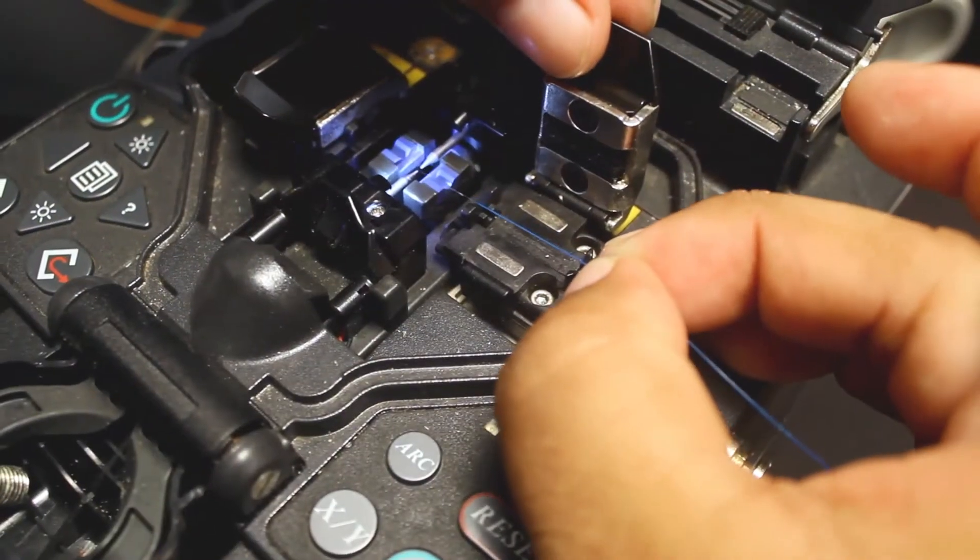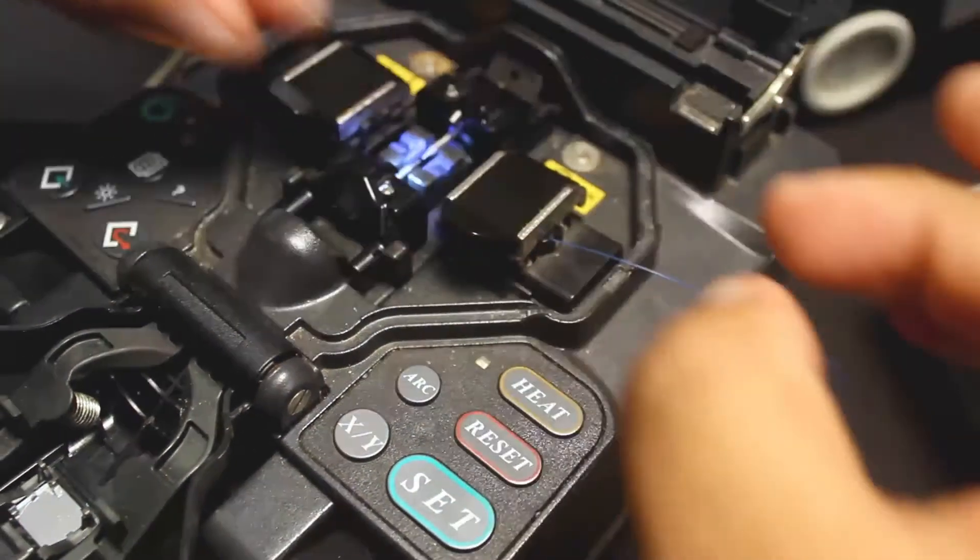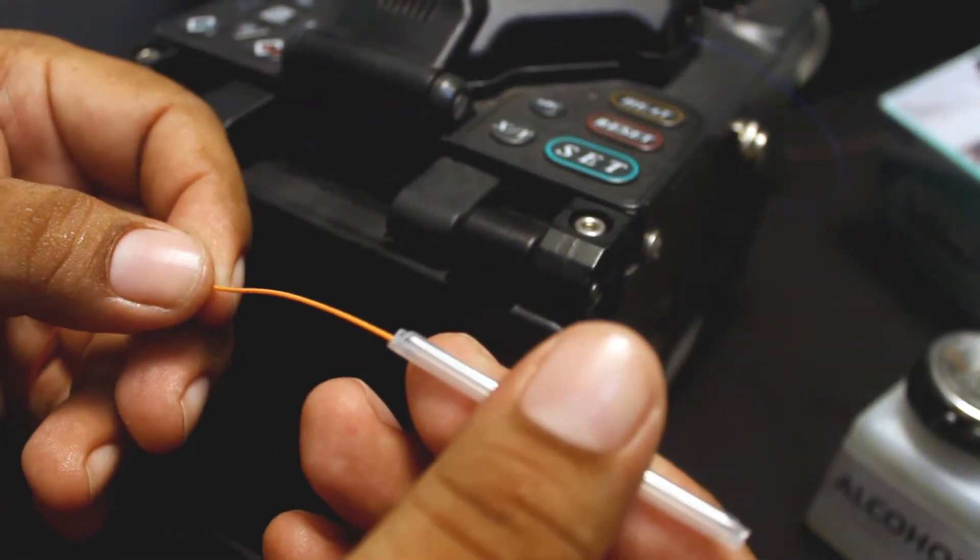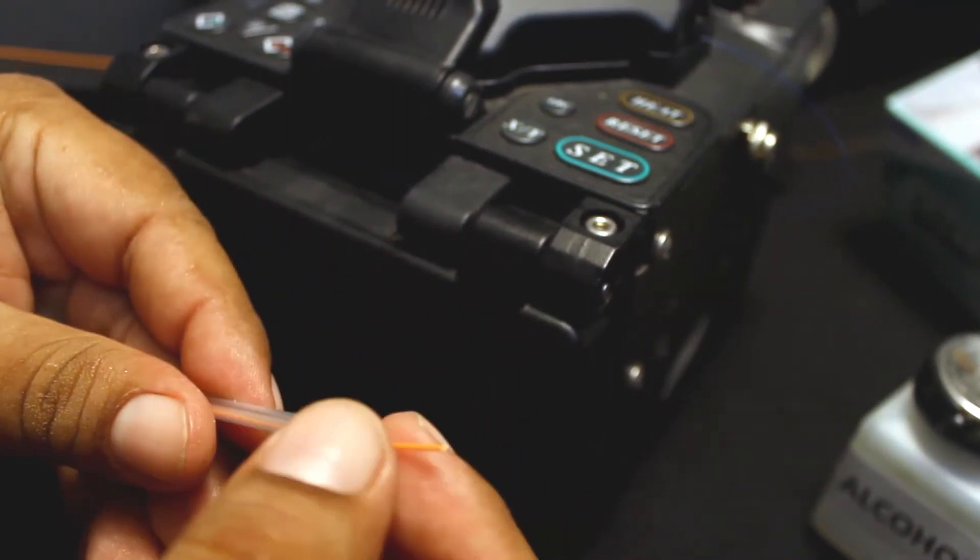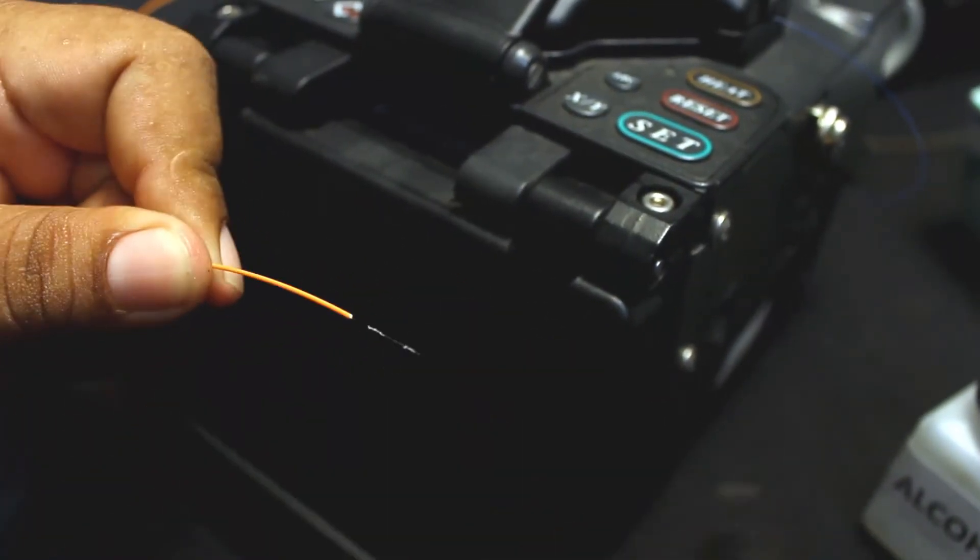Place the fiber into the splicer as close as possible to the electrodes and hold it with the clamps. Repeat the procedure with the other fiber, but first introduce the fiber into the fusion protection sleeve to protect the bare fiber once you remove the jacket.